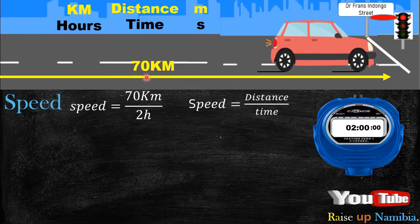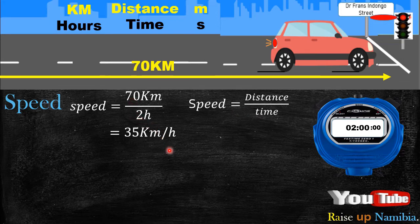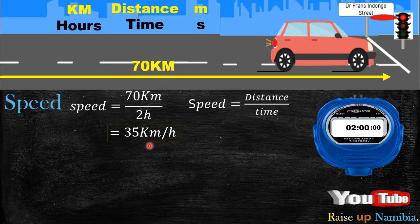Before substituting, always check your units. Our distance is in kilometers and our time is in hours, so we can substitute directly. 70 divided by 2 gives you 35 kilometers per hour — that is the unit for speed. You could also have meters per second, but in this example we used kilometers per hour.